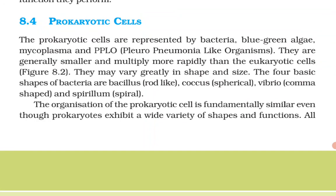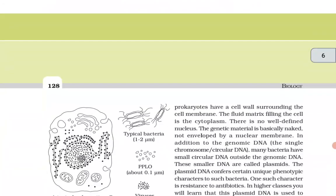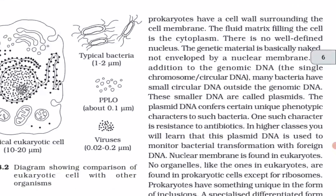Prokaryotic cells are represented by bacteria, blue-green algae, mycoplasma, and PPLO (pleuro-pneumonia-like organisms). They are generally smaller and multiply more rapidly than eukaryotic cells. The four basic shapes of bacteria are bacillus (rod-like), coccus (spherical), vibrio (comma-shaped), and spirillum (spiral). The organization of prokaryotic cells is fundamentally similar even though they exhibit a wide variety of shapes and functions.